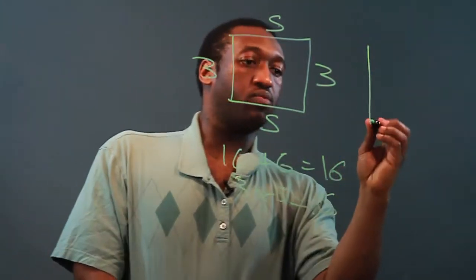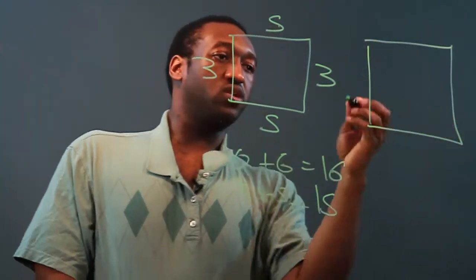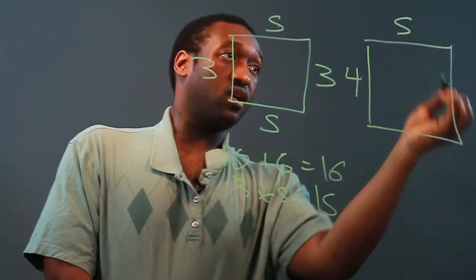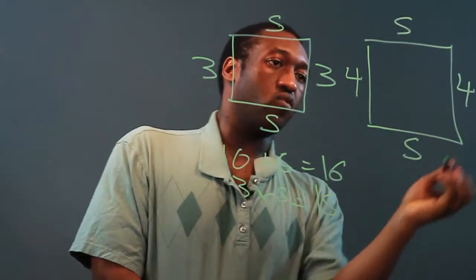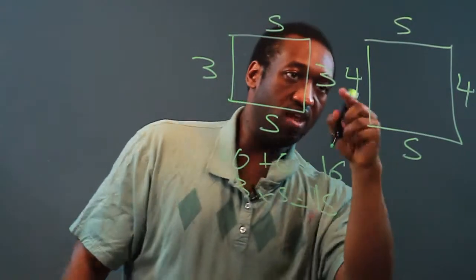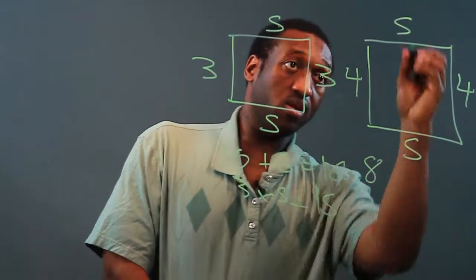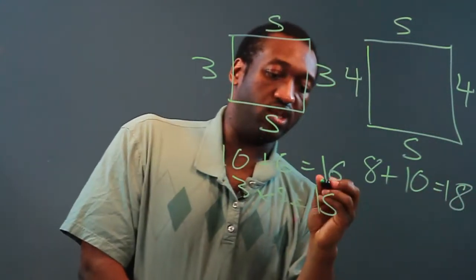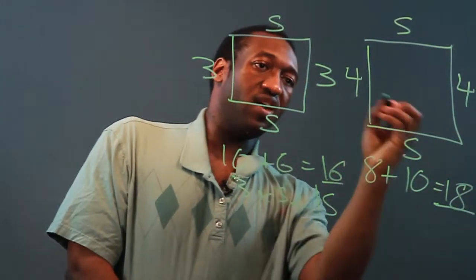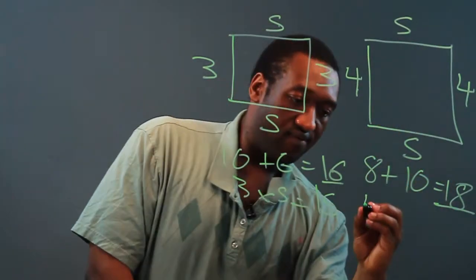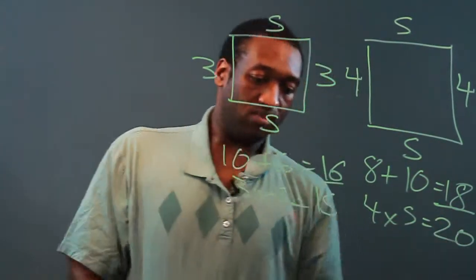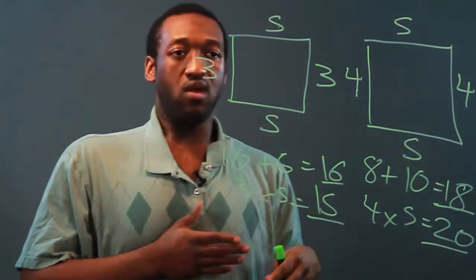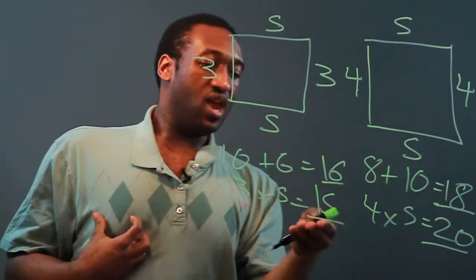Now let's say I want to increase the perimeter, and that can be done just by increasing any one side. So let's say 4, and I'll keep these the same — 5 and 5, 4 and 4. The perimeter would be 4 plus 4 is 8, plus 5 plus 5 is 10. That would be 18, so we see the perimeter increase. Now the area — 4 times 5 — is 20. So we also see the area increase. We see that when perimeter increases, area also increases.